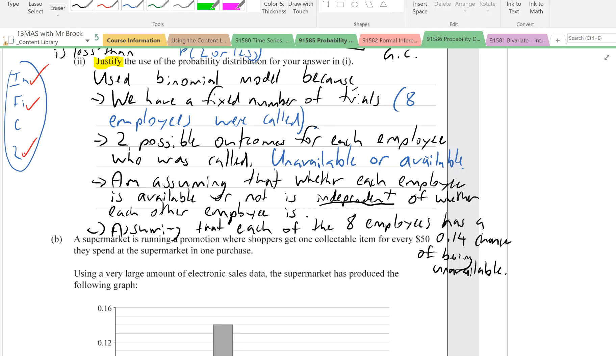You've got to have that context language. Can't get away with just saying fixed number of trials, two possible outcomes, independent, constant probability of success. You have to talk about employees and availability. You have to talk about the context.